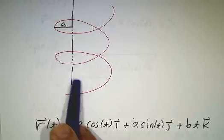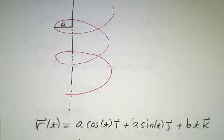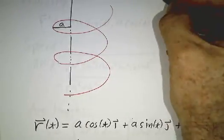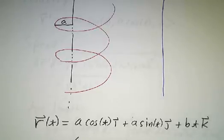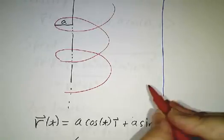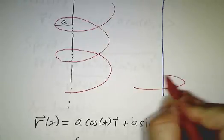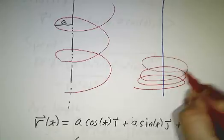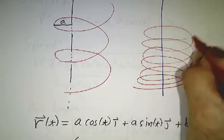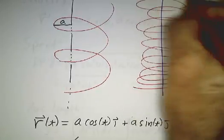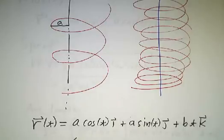So if b is moderately large, you get a picture like this. If b is small, you get a picture more like this. So b is essentially how much you've stretched out your spring or your slinky.